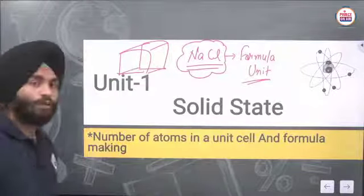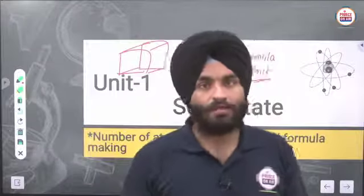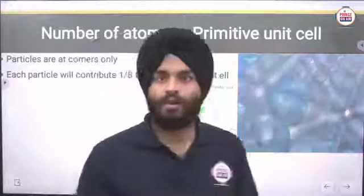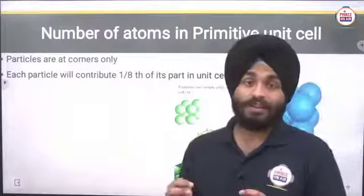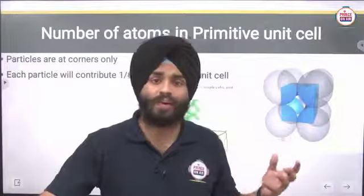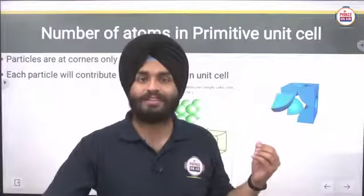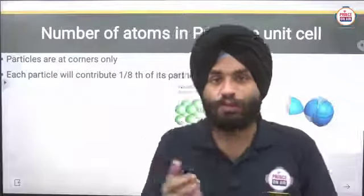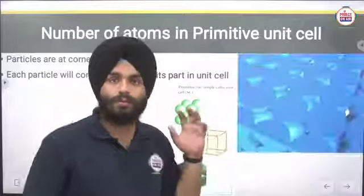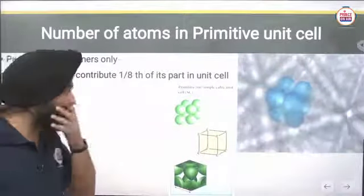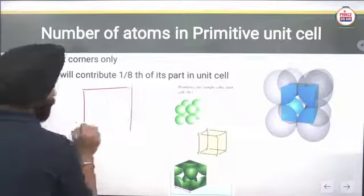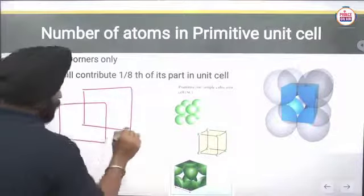First, we will discuss about the number of atoms in a given unit cell. Open your notebooks and write side by side. Number of atoms in a primitive unit cell: primitive unit cells are those in which the particles are present at corners only.